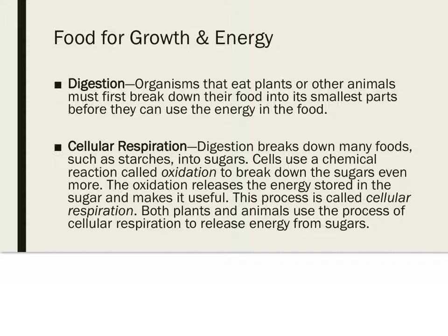There are two stages to the process in which animals can use food to get the energy and nutrients they need. These steps are digestion and cellular respiration. Digestion: organisms that eat plants or other animals must first break down their food into its smallest parts before they can use the energy in that food. Digestion breaks down many foods such as starches into sugars. Cells use a chemical reaction called oxidation to break down the sugars even more; the oxidation releases the energy stored in the sugar and makes it useful. This process is called cellular respiration. Both plants and animals use the process of cellular respiration to release energy from those sugars.